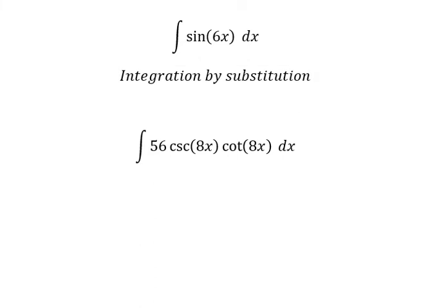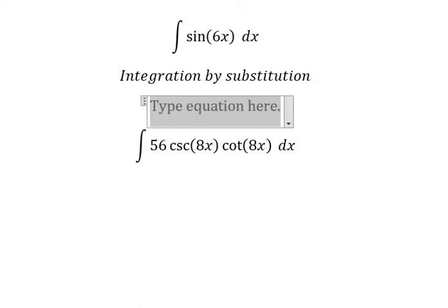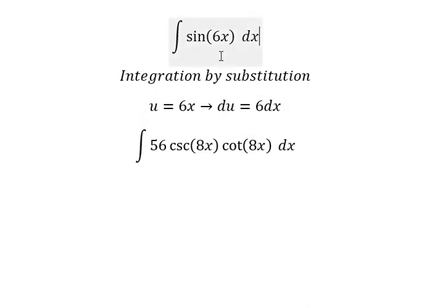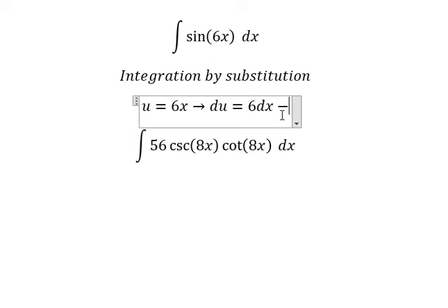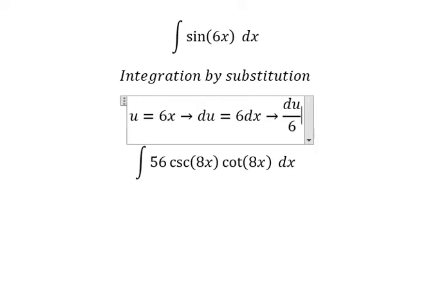We need to use integration by substitution. So I will put u equals to 6x, du. We got number 6 dx because first derivative of x you got number 1. Next, because we don't have number 6 next to dx, so we need to divide both sides by number 6.